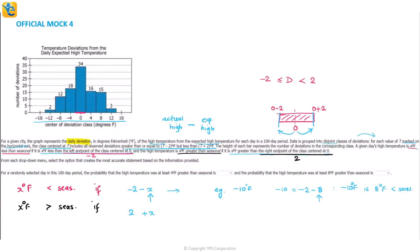Now let's read what the question is asking. For a randomly selected day in this hundred-day period, probability that the high temperature was at least four degrees Fahrenheit greater than seasonal is blank. Let's think about this part. We're talking about the second definition only, the greater than seasonal part. A temperature was at least four degrees Fahrenheit greater than seasonal. Now if x is at least four, it means this is greater than or equal to four. Then this 2 plus x thing will be greater than or equal to six, which means you are talking about all of the temperatures which are greater than or equal to six degrees Fahrenheit.